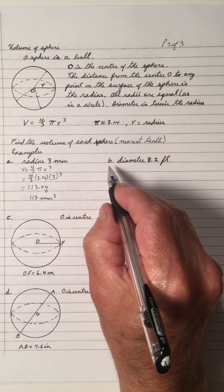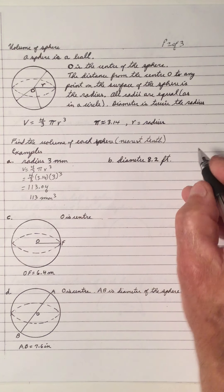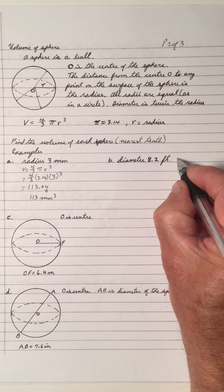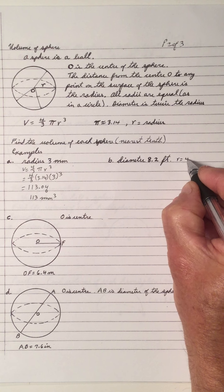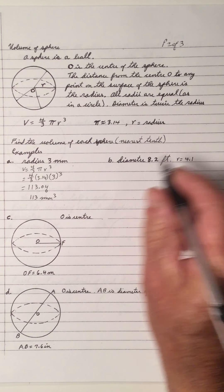Let's do B — diameter. If the diameter is 8.4, that means the radius is half of that, so it's 4.2.